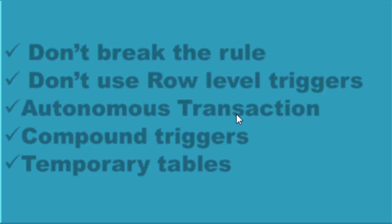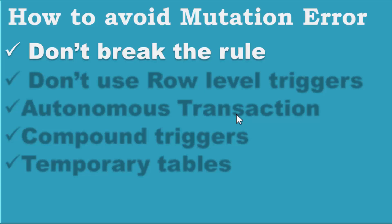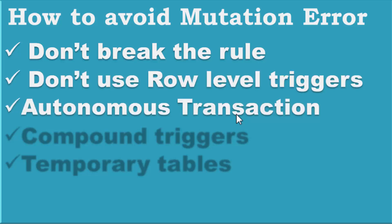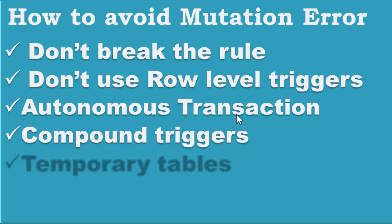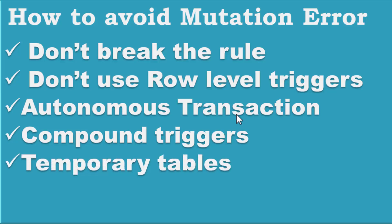How can we avoid mutation error? Simply do not break the rule — don't use the same table for insert and selection at the same time. Use temporary tables or views. Don't use row-level triggers, or use autonomous transaction. Using autonomous transaction, compound triggers, or temporary tables and views — storing data in a temporary table and fetching from it instead of the same table — we can avoid mutation error.